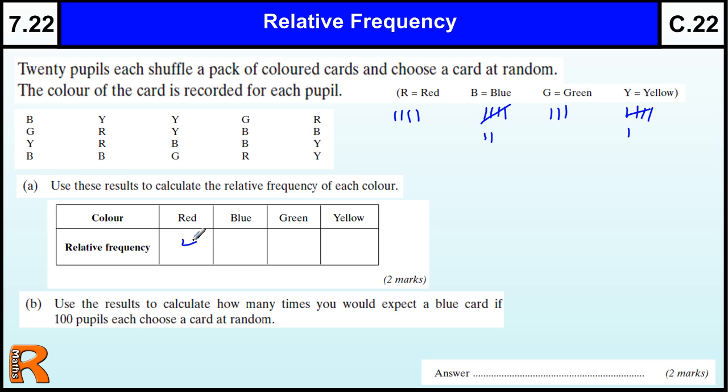So, red, there's 4. Blue, there is 7. Green, there is 3. And 6 are yellow.